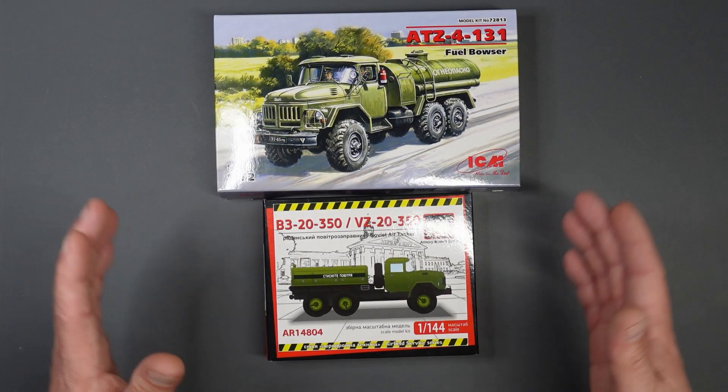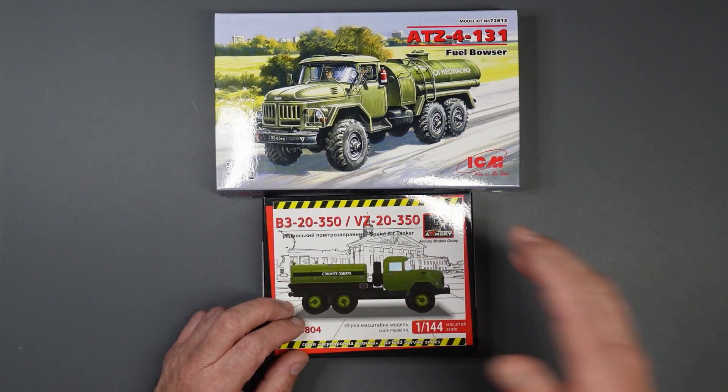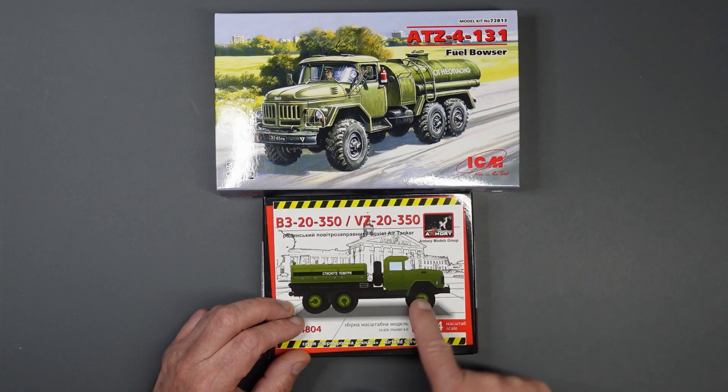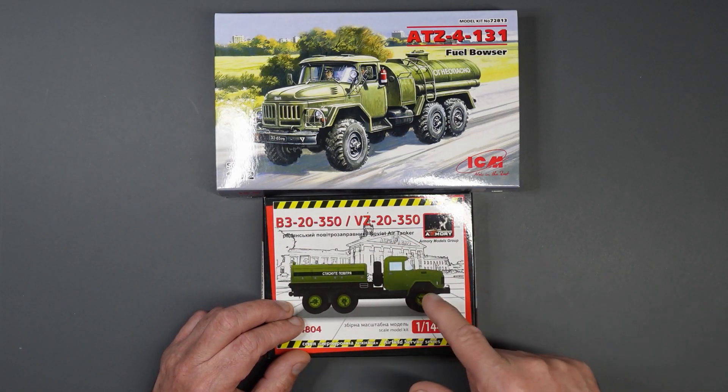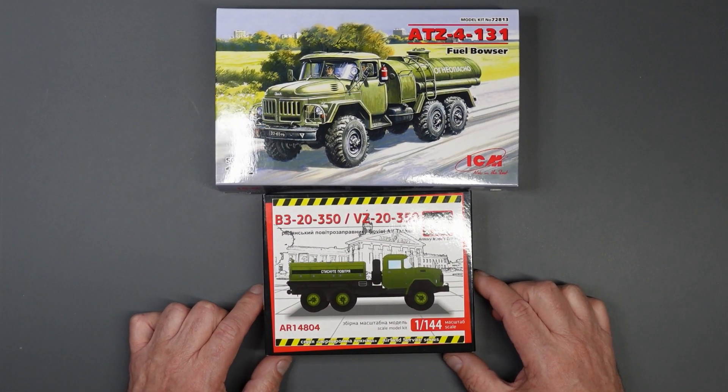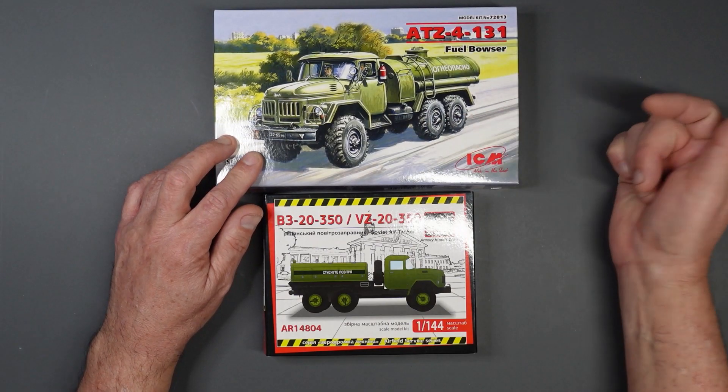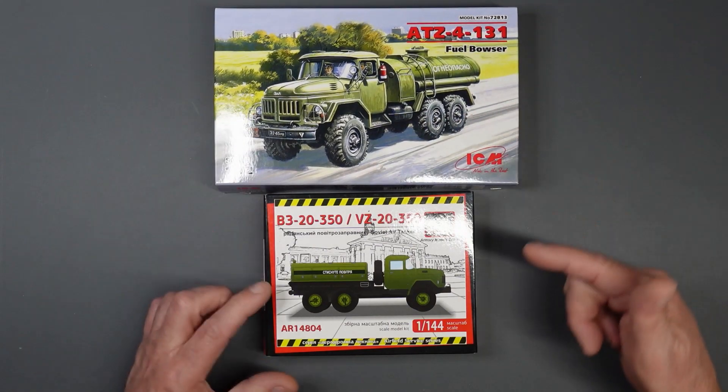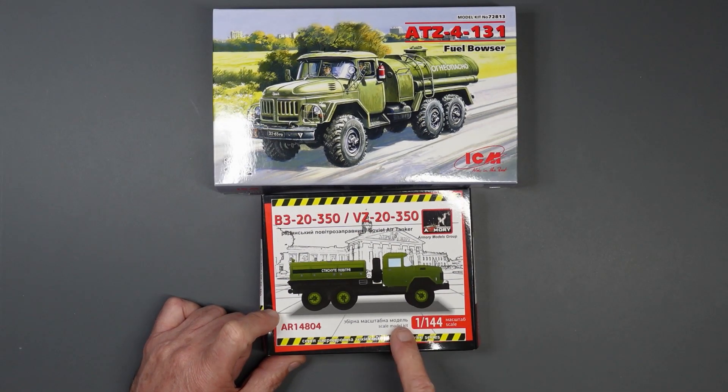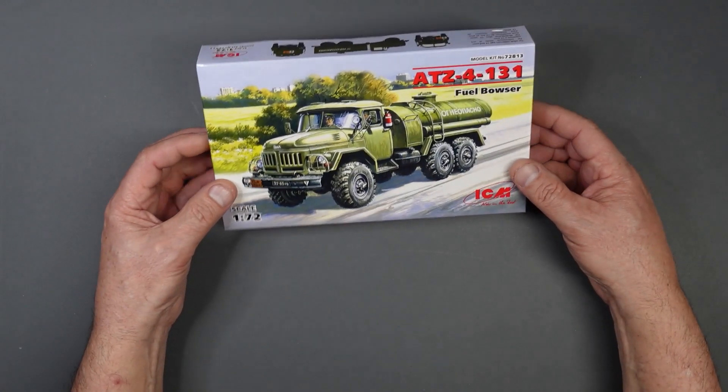So anyway, these two kits, both tankers. Now this one is saying it's an air tanker. So I don't know if that's a translation of it's a fuel tanker made for airfields or if it's actually a compressed air tanker. I don't know. Maybe you can let me know in the comments below. This one here I know is a fuel bowser because it says here fuel bowser. This one is 72nd scale. This, believe it or not, is 1:144th scale. This one's ICM. This one's Armory. And as I say, both made in Ukraine. Let's have a look at the 72nd scale one first.